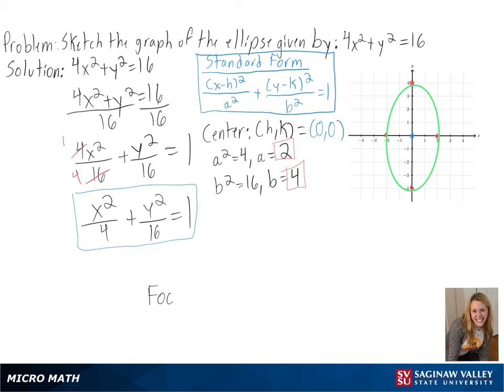If needed, we could also find the foci of our ellipse by finding c, or the square root of b squared minus a squared. This will be plotted on our longest axis, in this case, our y axis, on either sides of our center. By plugging in our values, we get the square root of 12, or around 3.46 on either side of our center.